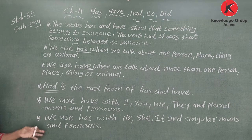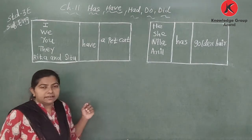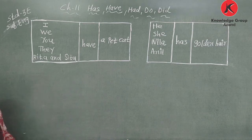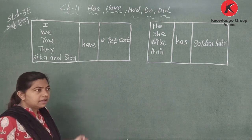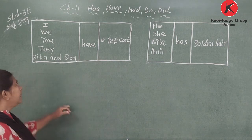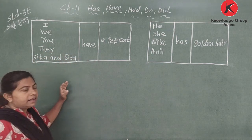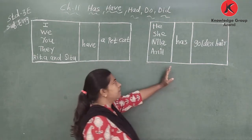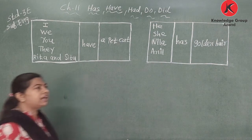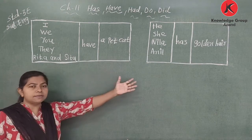Write down these things in your English grammar. Now let's see here — I will explain with whom we have to use has and have. Uses of has and have. Let's make sentences using has and have.